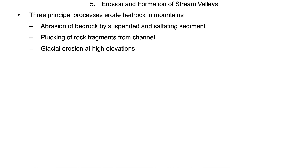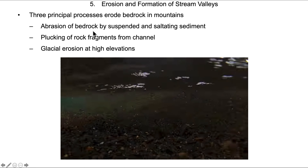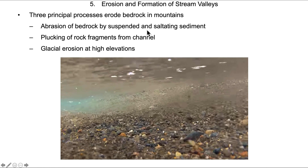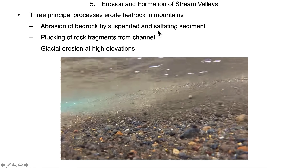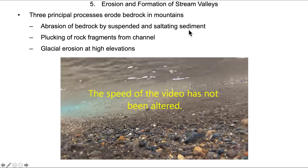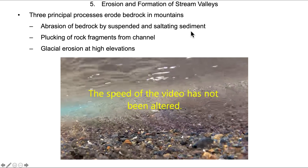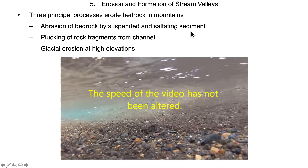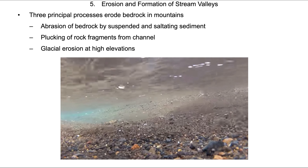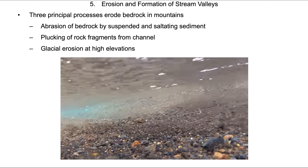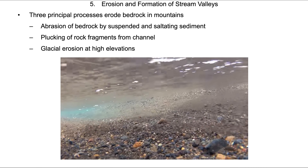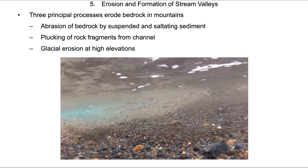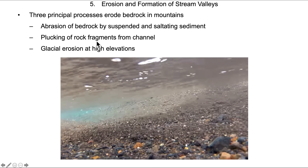The formation of stream valleys results from three principal processes that erode bedrock and mountains. The first is abrasion of bedrock by suspended and saltating sediment — sediment either gliding above or bouncing along the stream bed — knocking little bits and pieces off the material below and material it bumps into during the saltation process.